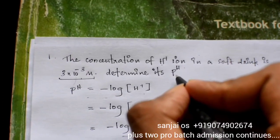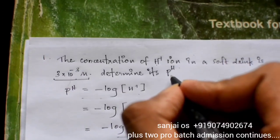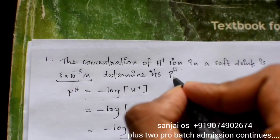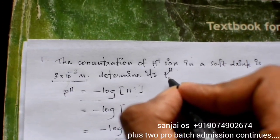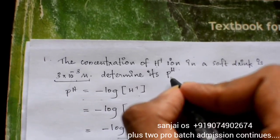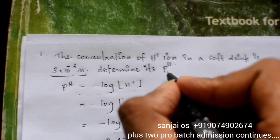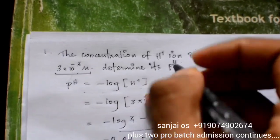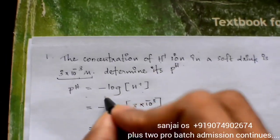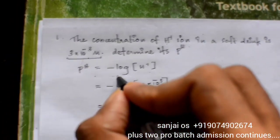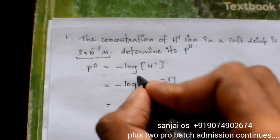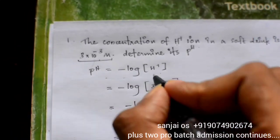The hydrogen ion concentration is 3 into 10 raised to minus 3 molar. We will calculate the pH of the solution. The equation is: pH equals minus log of concentration of H plus ion.